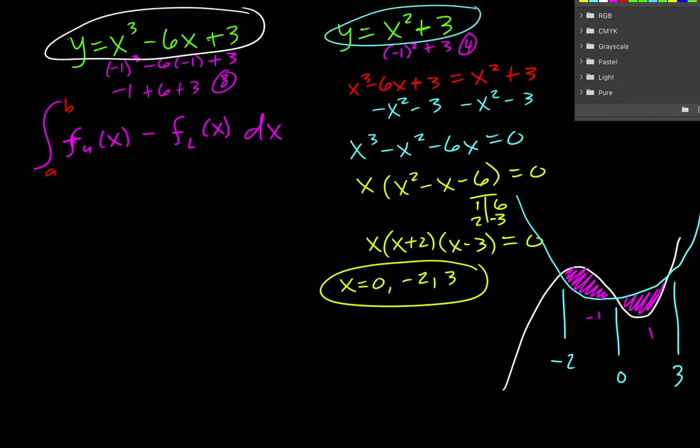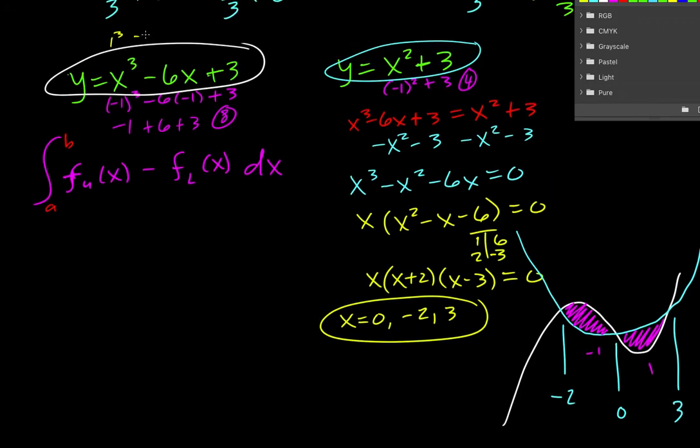Now I want to double check with 1. It should work out. But if I plug in 1 here, I get 1 cubed. Let's do that. 1 cubed minus 6 times 1 plus 3. So that's just 1 minus 6, which is negative 5, plus 3, which is negative 2. Then I plug in a 1 squared plus 3. So 1 plus 3 is 4. So yes, the blue one is on top. So my drawing does represent the function pretty well.